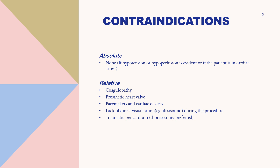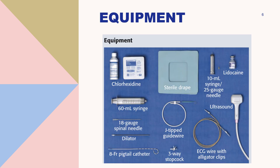Now let's talk about equipment required for pericardiocentesis. As seen in this image, these are all the required instruments. The most essential is the ultrasound machine, which is used first to determine whether a pericardial effusion is present and then to assist in accurate needle placement. Ideally we use a probe with a small footprint and a frequency of 2–4 MHz. If that probe is not available, we use a 2–3.5 MHz linear probe in the sub-xiphoid view, which also provides excellent images of the heart.